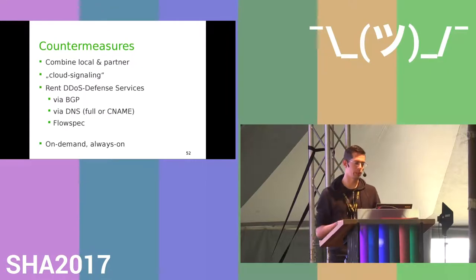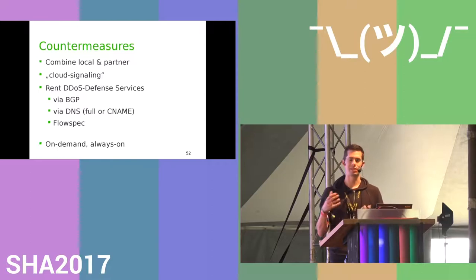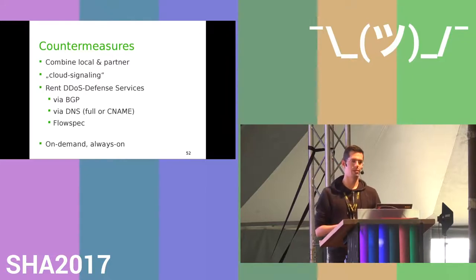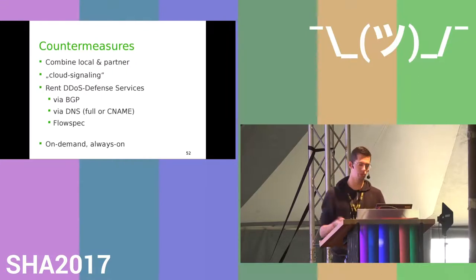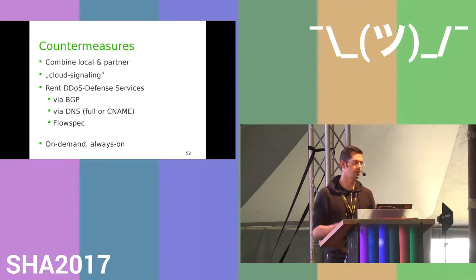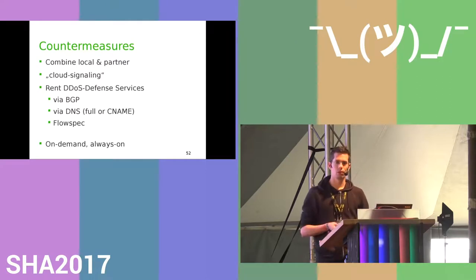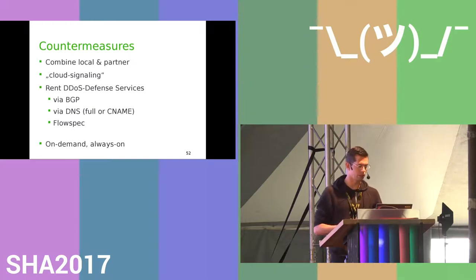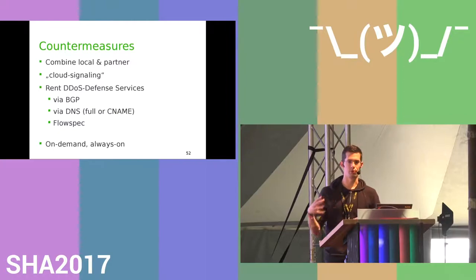I recommend combining local defense with a partner using cloud signaling. If you have a local appliance and it detects an attack you can't handle — say, 9.9 of your 10 gigabits are in use — it can do cloud signaling, causing the provider to start announcing your BGP prefixes so traffic takes a different route, gets cleaned there, and only clean traffic is sent back to you. You can also do this via DNS — Cloudflare's usual setup. Finally, FlowSpec lets you dynamically send firewall rules to the provider, though hardly anyone implements it.